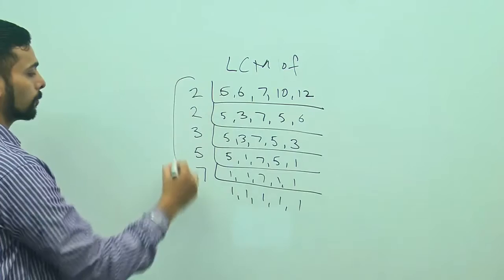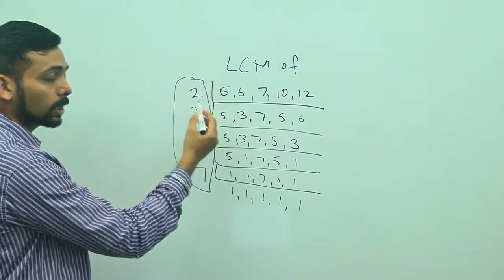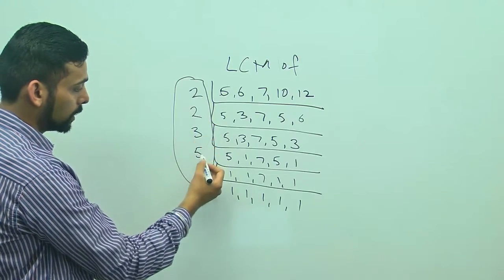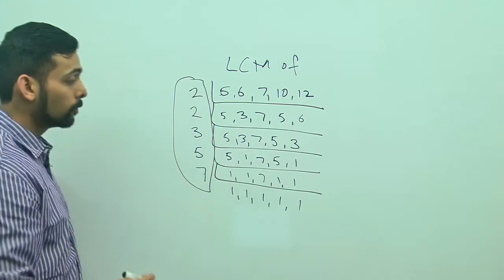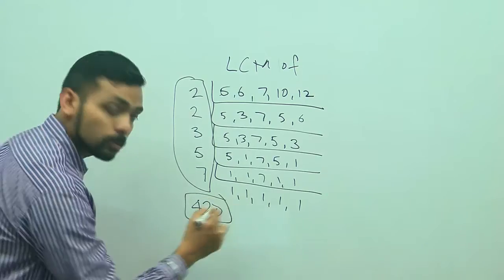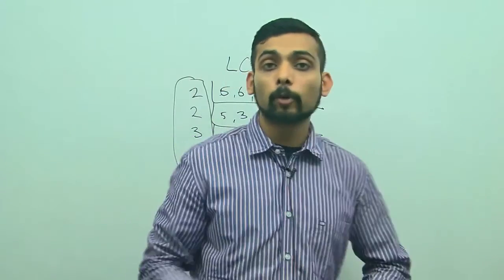Now I will take the product of these numbers, so I get 2 times 2 is 4, times 3 is 12, times 5 is 60, times 7 is 420. So the bells will toll together again after 420 seconds.